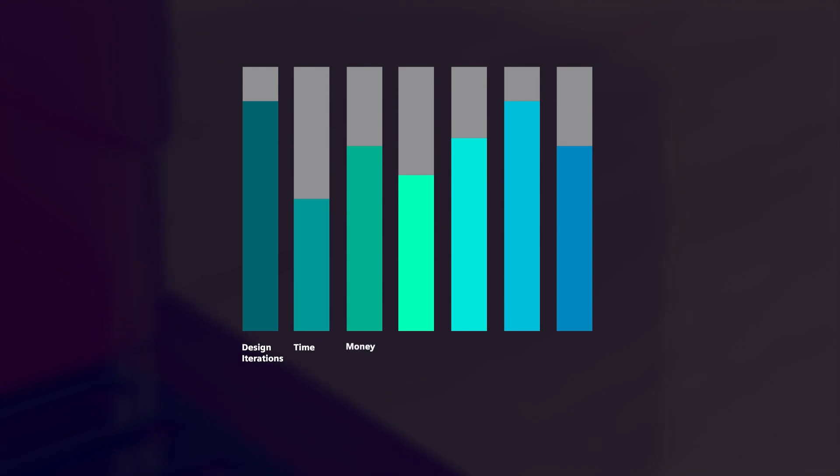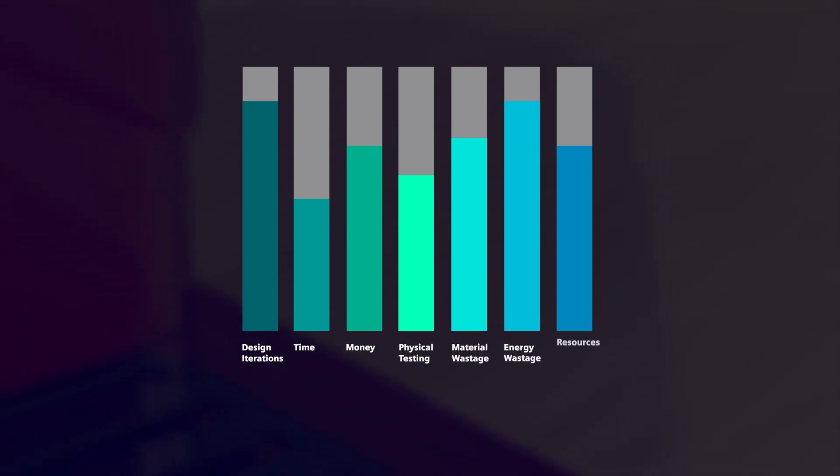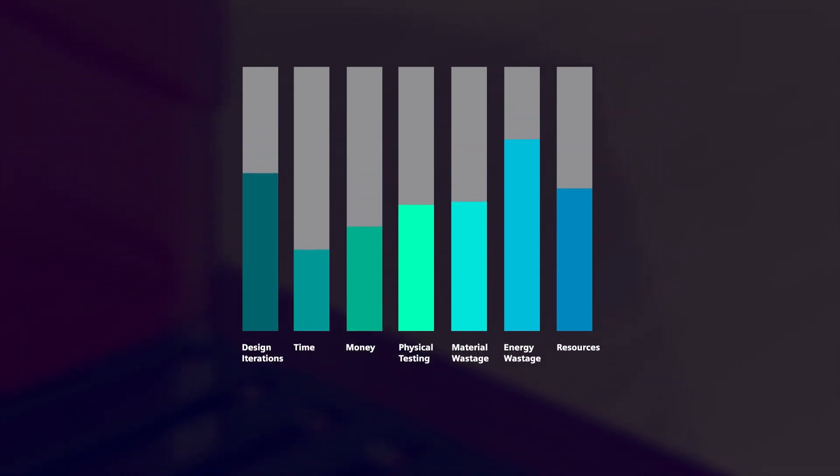Now we've added in all the necessary moulded plastic features, including bosses, snap fits, ribs, grooves and drafts. Next, we can run an additional overall validation of the part and its features. We can see some warnings about certain features that we may need to investigate further to avoid defects, but overall the part looks ready for manufacturing. Validating design for manufacturability early in the product development process means fewer design iterations before going to market, saving the company significant time and money.